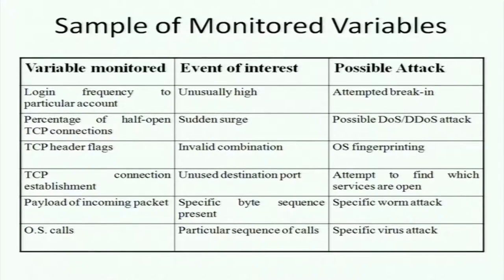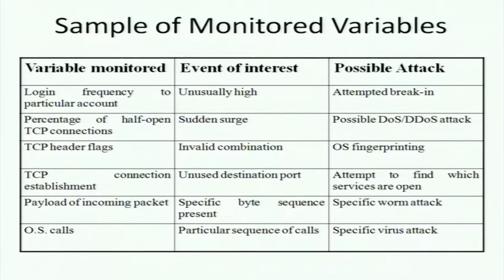Another variable is the percentage of half-open TCP connections — where the SYN packet has arrived, the SYN-ACK has been sent, but the third packet has not arrived. Seeing many such half-open TCP connections raises suspicion of a possible DoS or DDoS attack. TCP header flags showing unusual combinations are another variable to monitor.